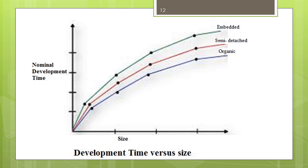The development time versus product size in KLOC is plotted in this graph. From this graph it can be observed that development time is a sub-linear function of the size of the product — that is, when the size of the product increases by 2 times, the development time doesn't double but rises moderately. This can be explained by the fact that for larger products, a larger number of activities can be carried out concurrently by engineers, reducing the overall project completion time.